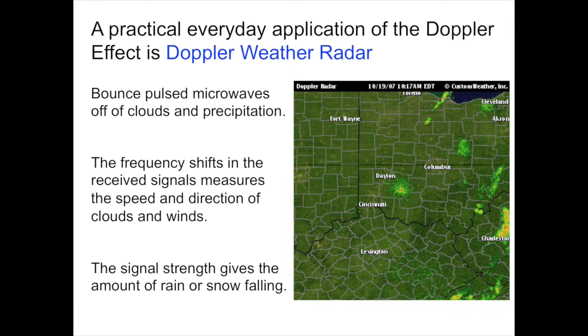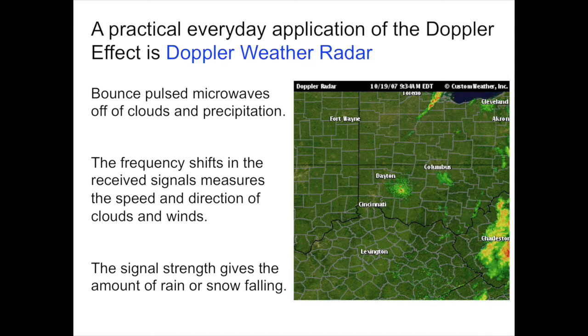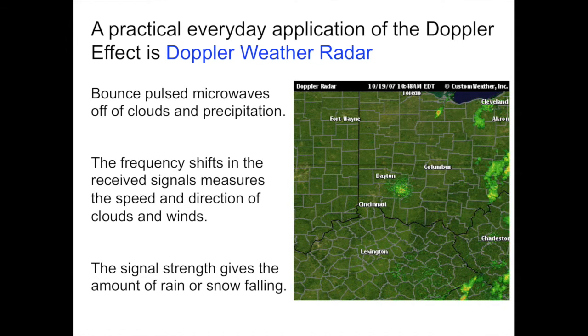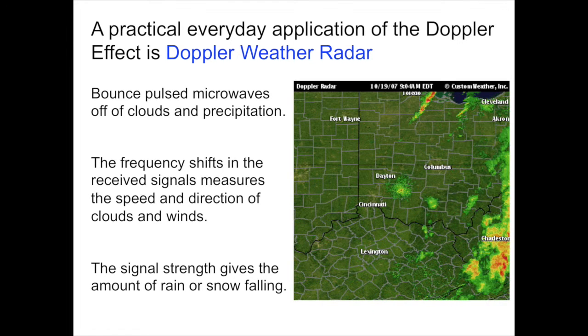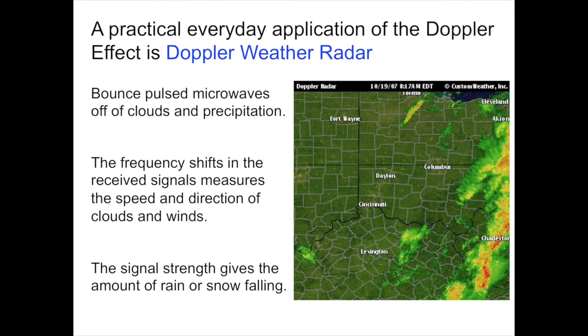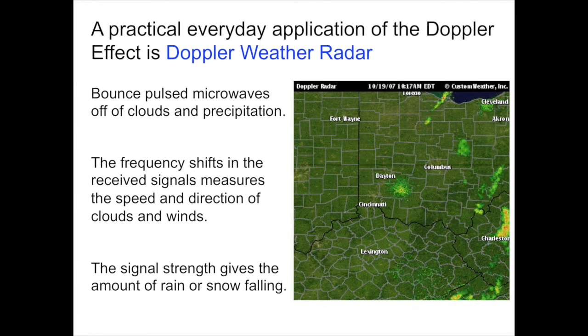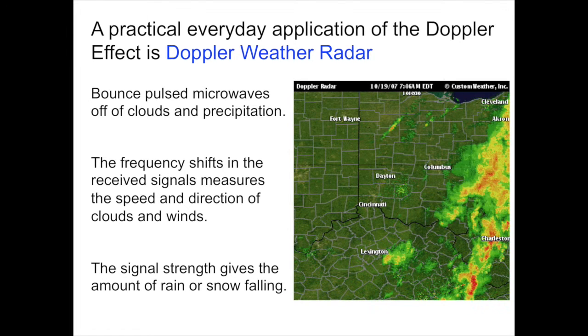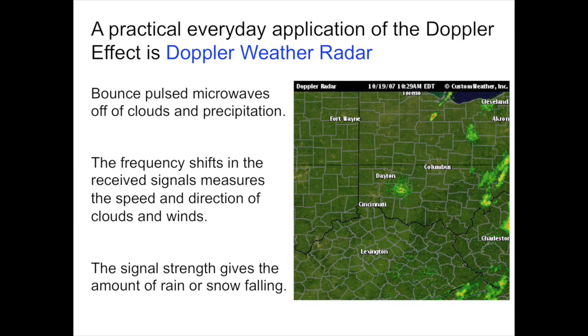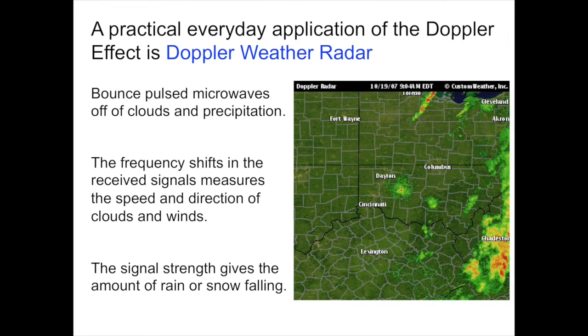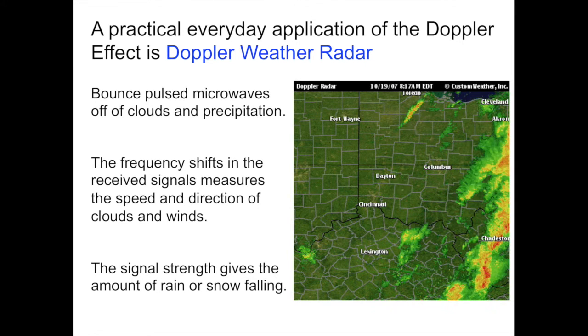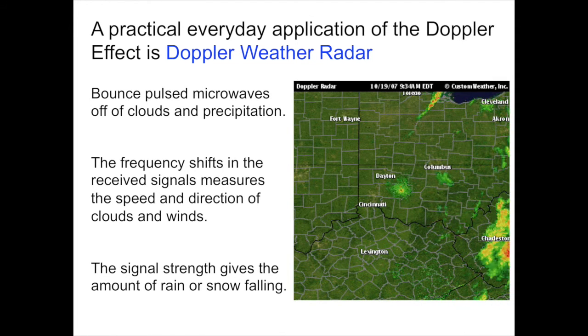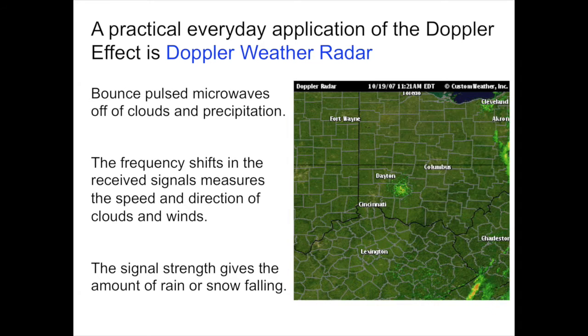The microwave radar antenna bounces pulsed microwaves off of distant clouds or precipitation falling from those clouds. The frequency shift in the received signal that's measured by the Doppler radar system tells us the speed and direction of the clouds and winds in a distant location. The signal strength can also be used to give us an idea of how many clouds there are, whether they're heavy clouds or light clouds. And if there's any precipitation, rain or snow falling, the strength of the signal returned will be stronger if there are a lot of water droplets or snowflakes for the signal to bounce off of.